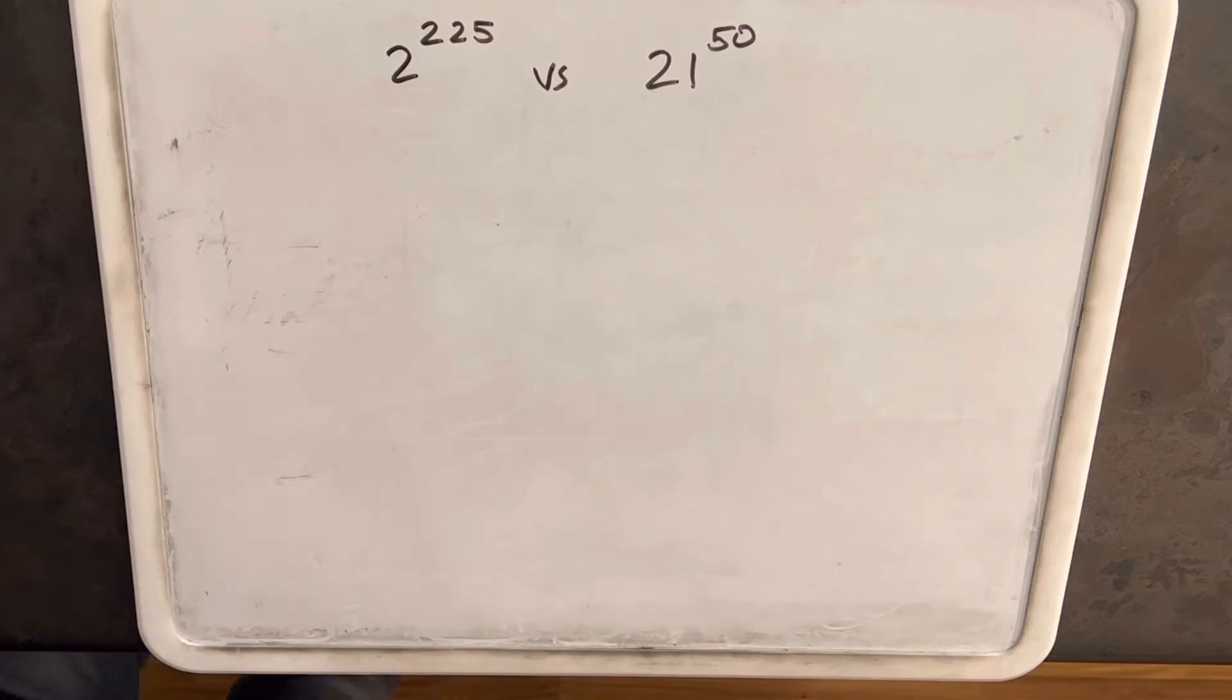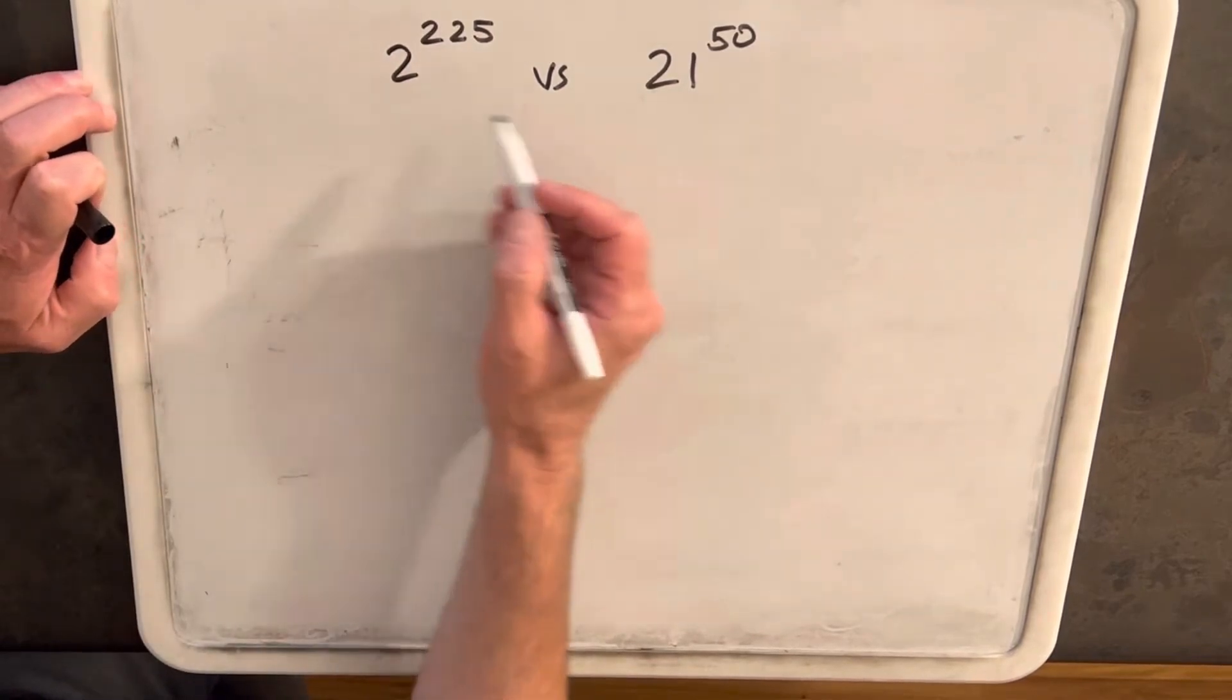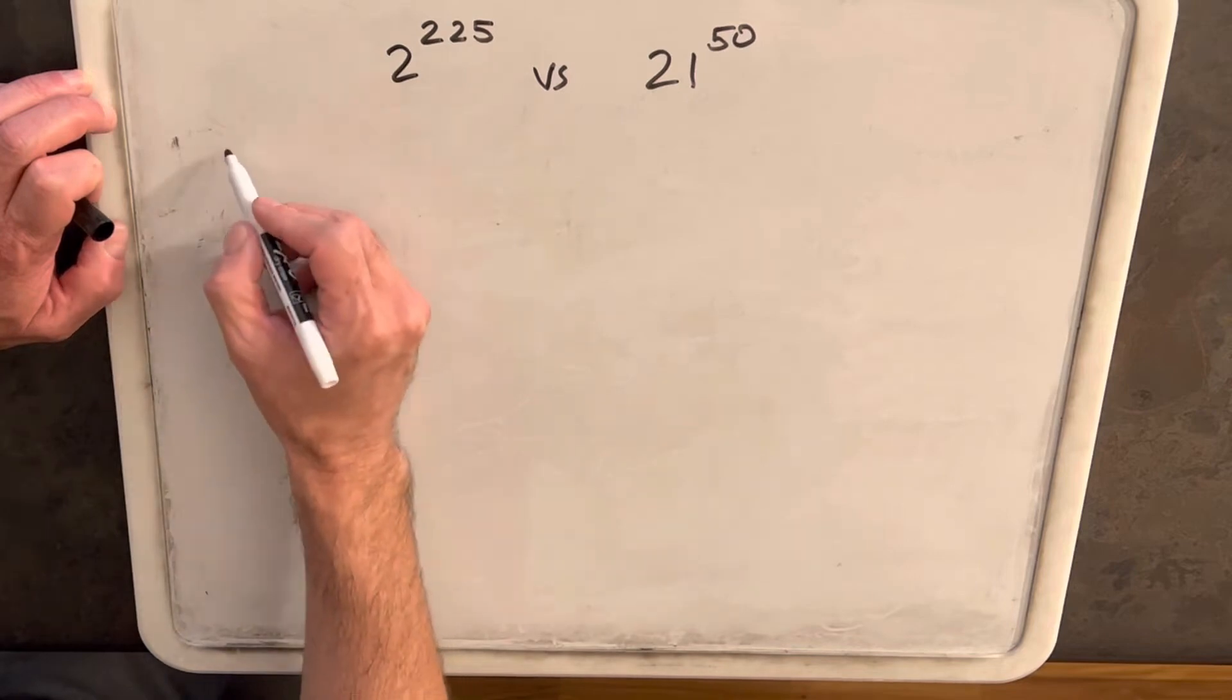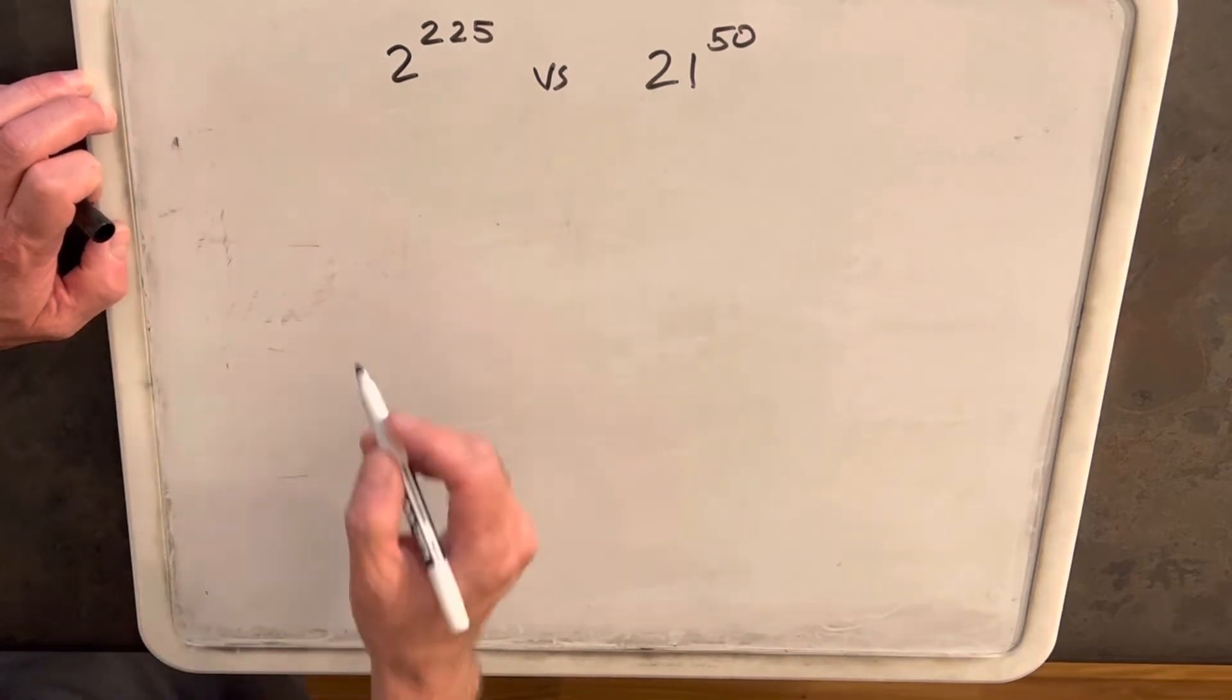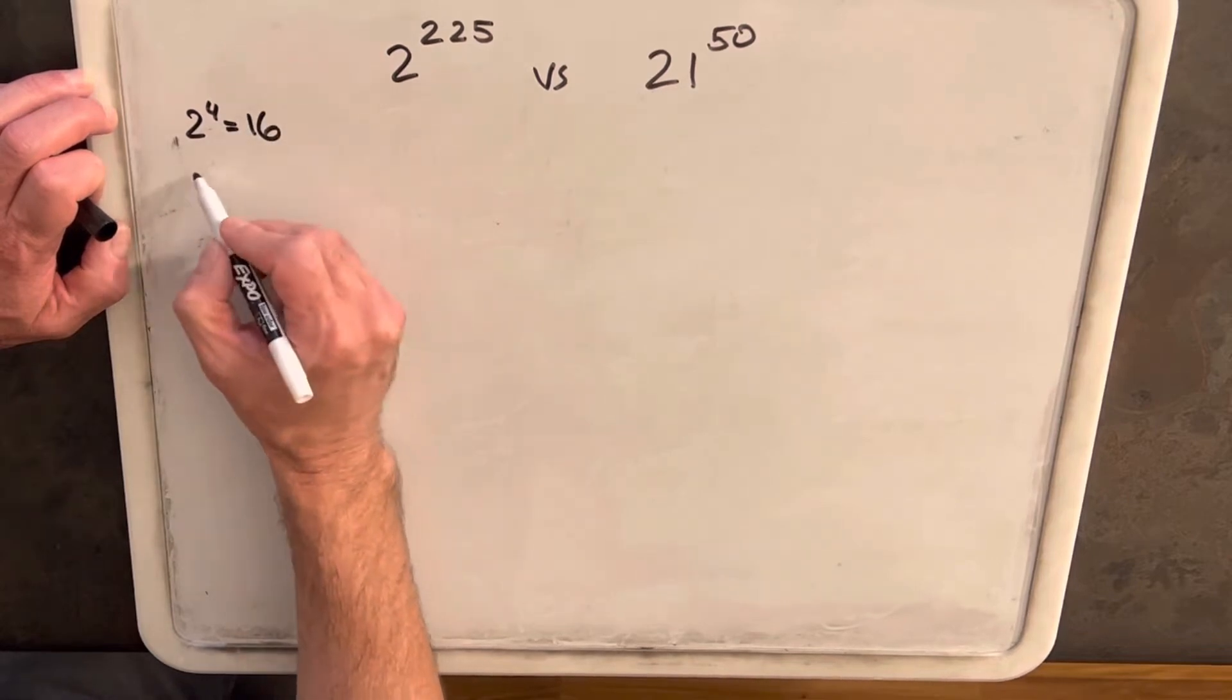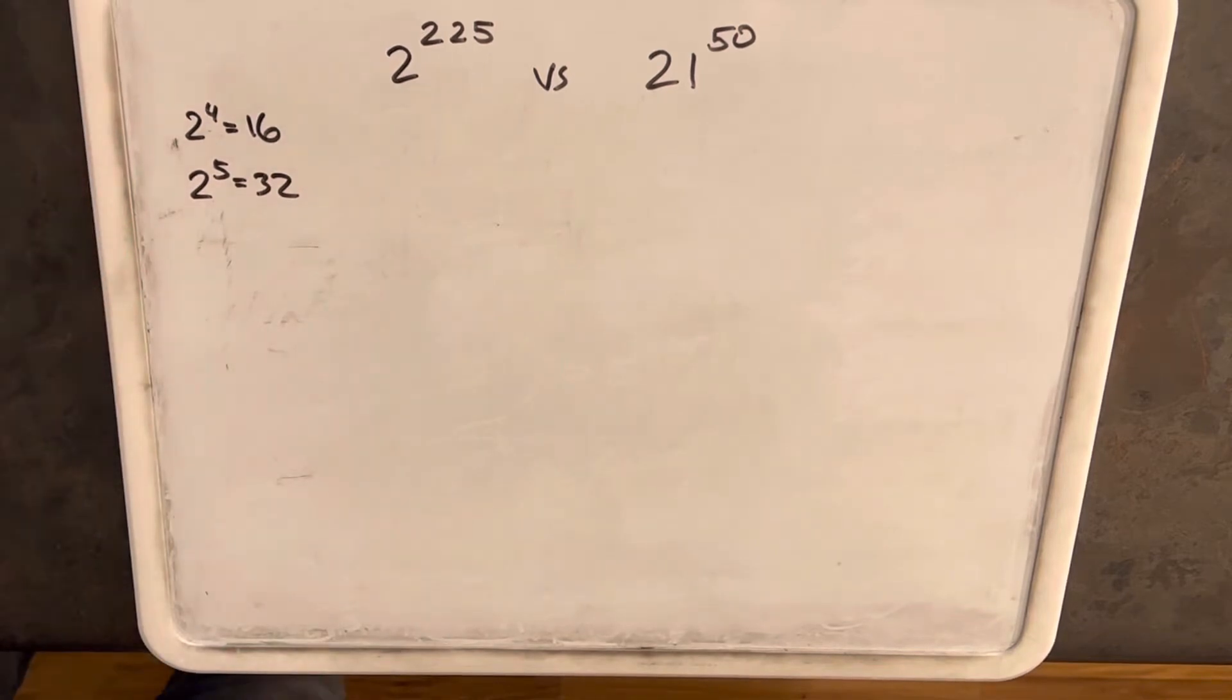At first this looks like a problem because I usually want to find a good point of comparison, but the problem is there's no power of 2 that's really that close to 21. I just have two values to look at. We know that 2 to the 4th is 16 and 2 to the 5 equals 32, so we can try those to start.